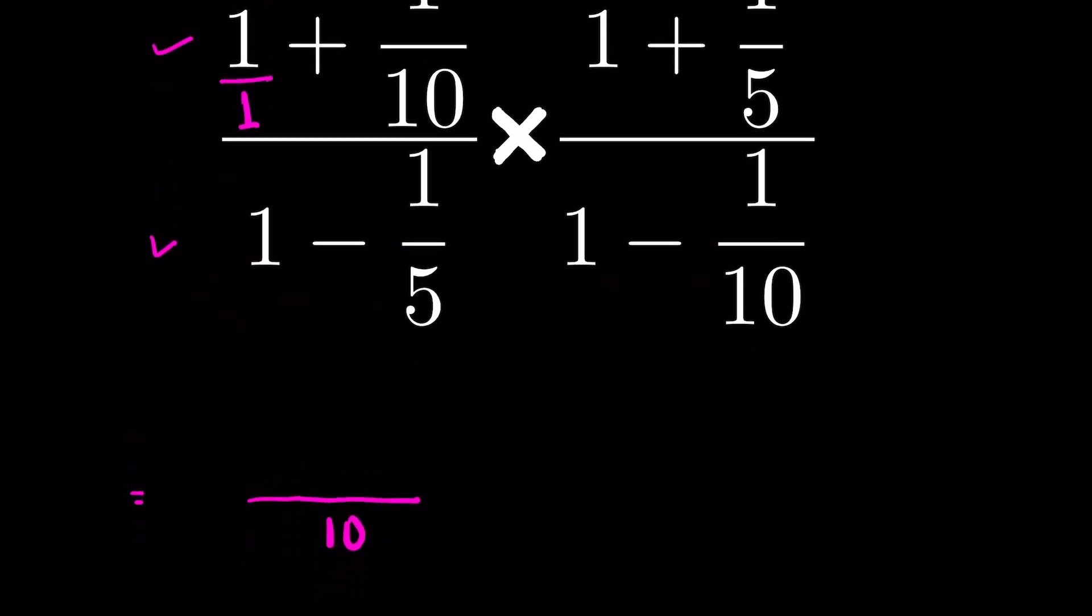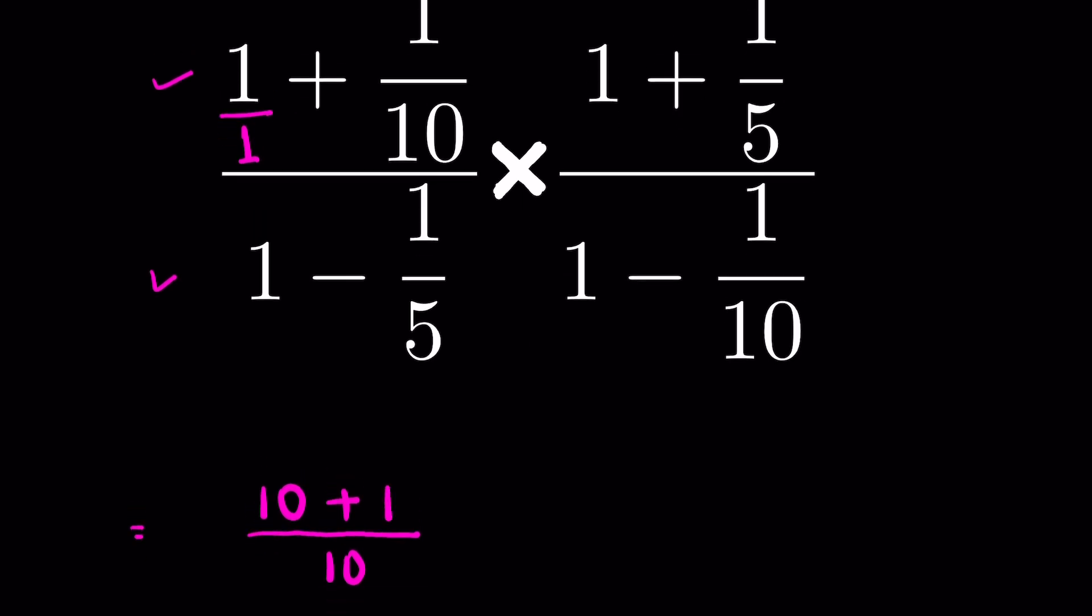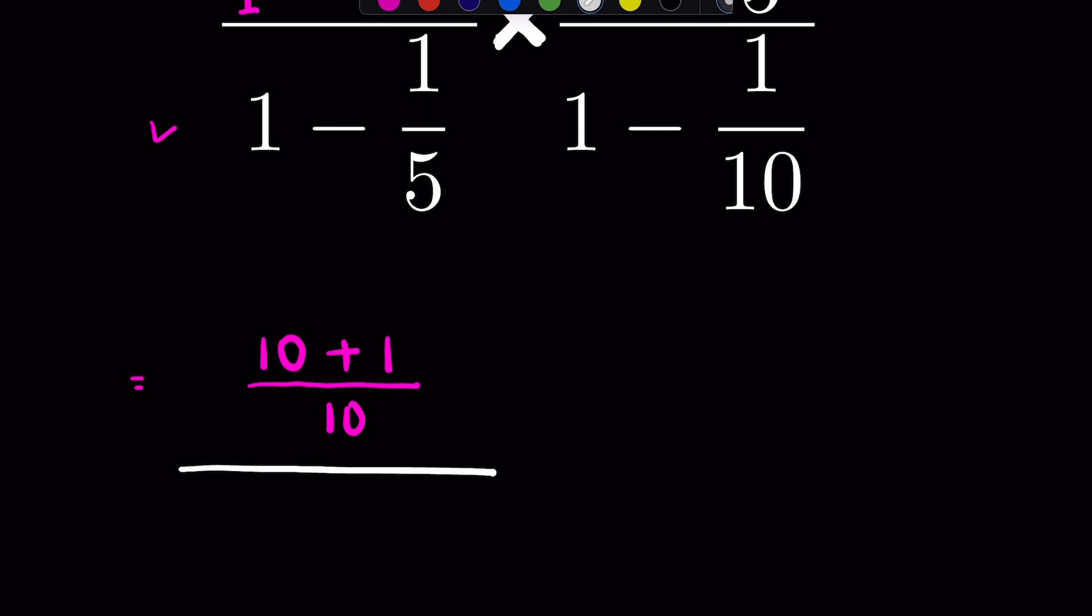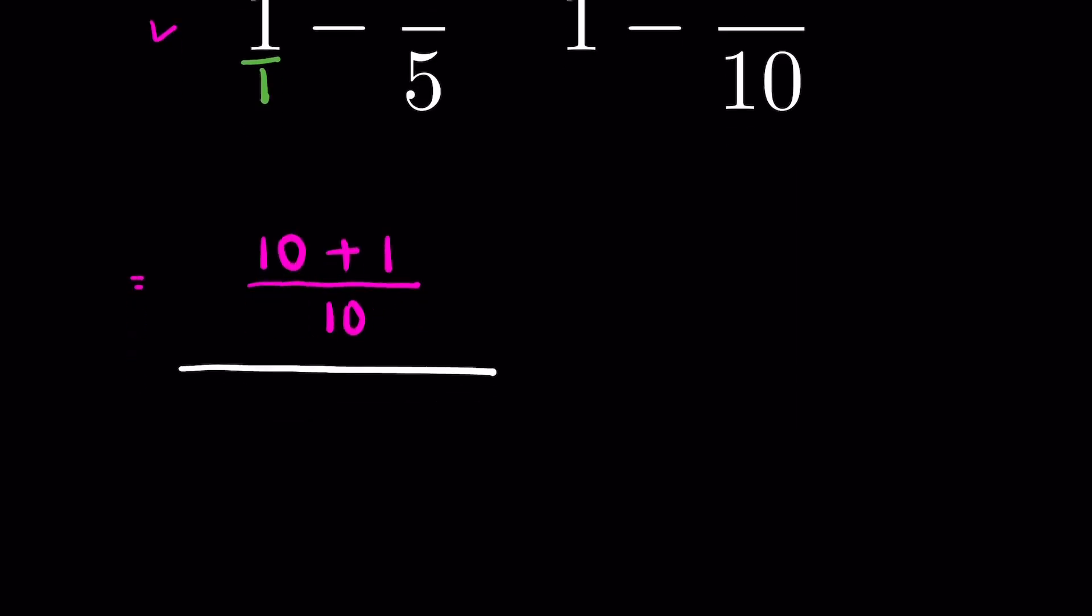LCM will be 10, so this will be 10 divided by 1 multiplied by 1, so 10, plus 10 divided by 10 is 1, and then 1 times 1 is 1. Here again we write 1 upon, so this